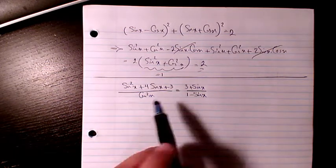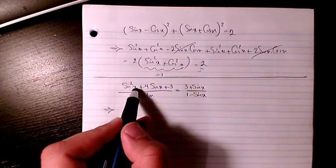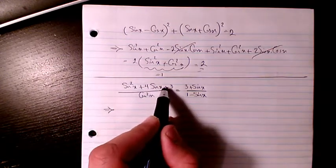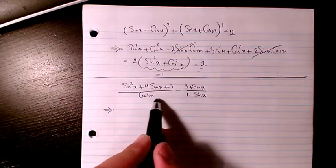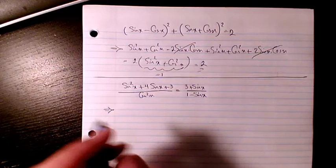In this example we need to verify this equation. I have sine squared x plus 4 sine x plus 3 divided by cosine squared x equals 3 plus sine x divided by 1 minus sine x.